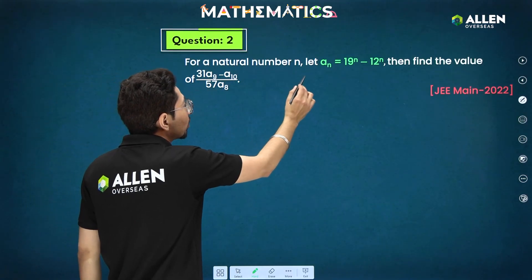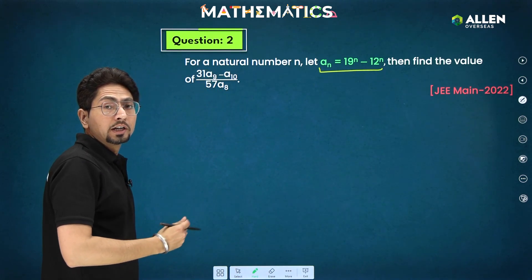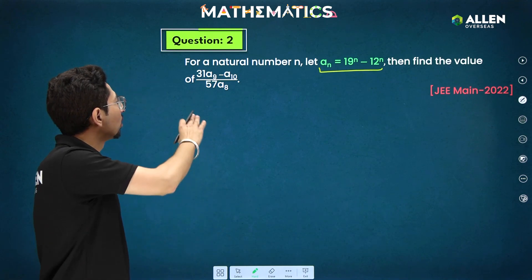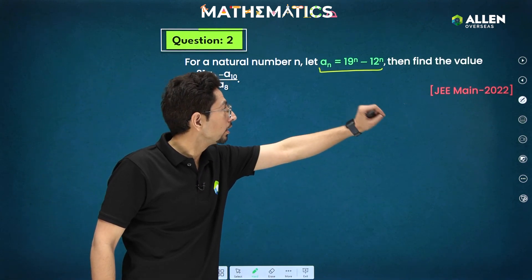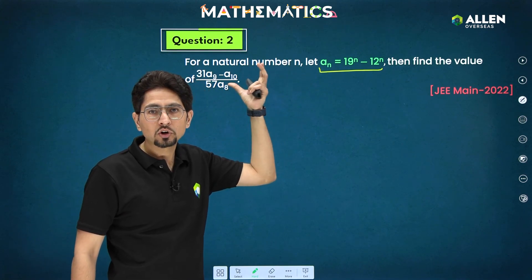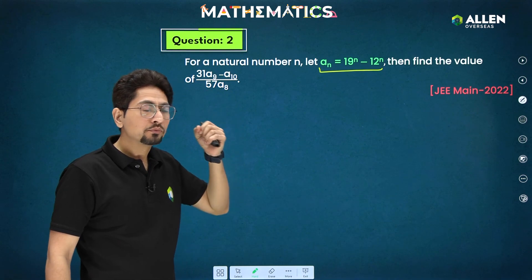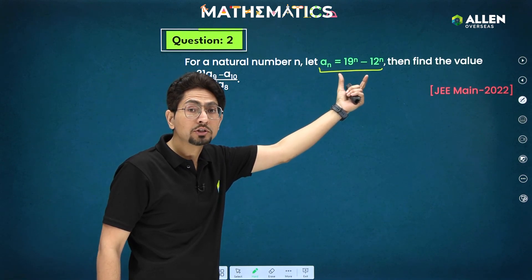Second question. For a natural number n, let again an is 19 power n minus 12 power n then find value of this one. This was asked in JEE Main 2020, 2 only. Now as you can see, no mention of quadratic equation, no mention of alpha beta. But we can apply the same procedure because of the Newton's theorem here.